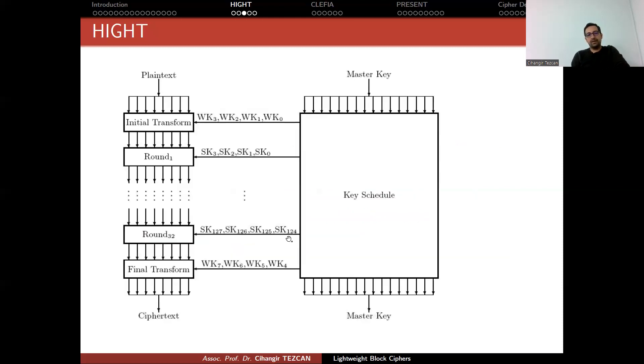So their idea is as follows. From the master key, they have a key schedule algorithm. But just focusing on the master key bytes, they provide bytes called subkeys. These are whitening keys and these are subkeys. So from the master key, they produce a lot of subkeys and they perform 32 rounds of encryption.